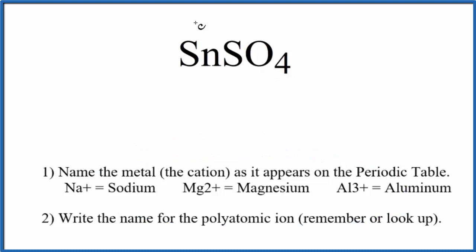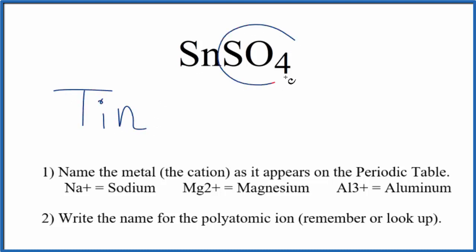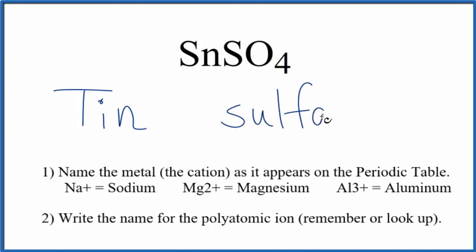We first write the name of the metal. Sn, that's tin. And then we write the name for the polyatomic ion, the sulfate ion, lowercase s. And so far, the name we have for SnSO4 is tin sulfate.